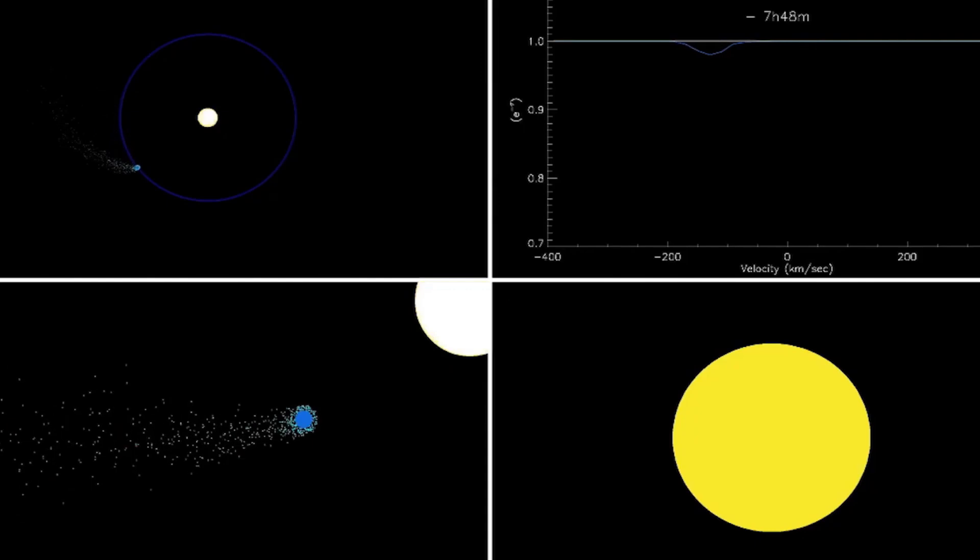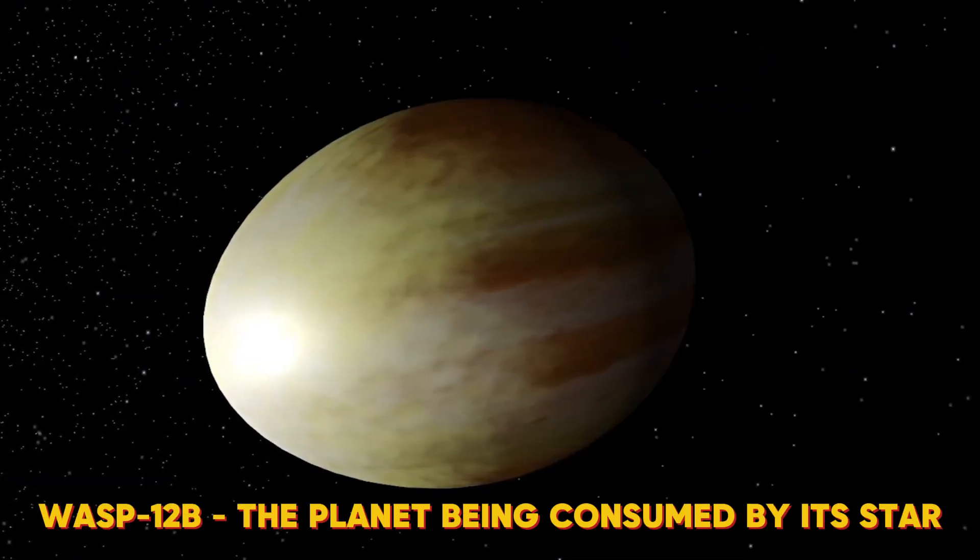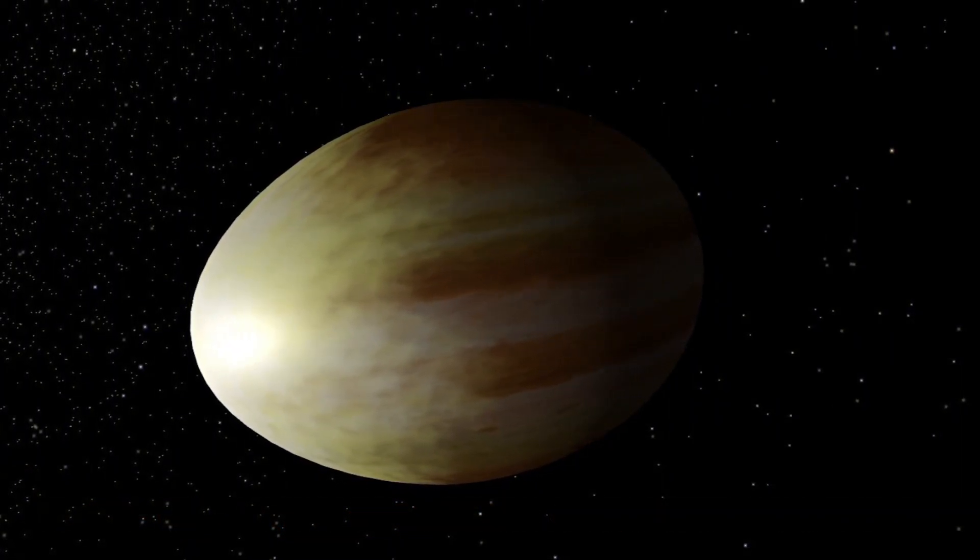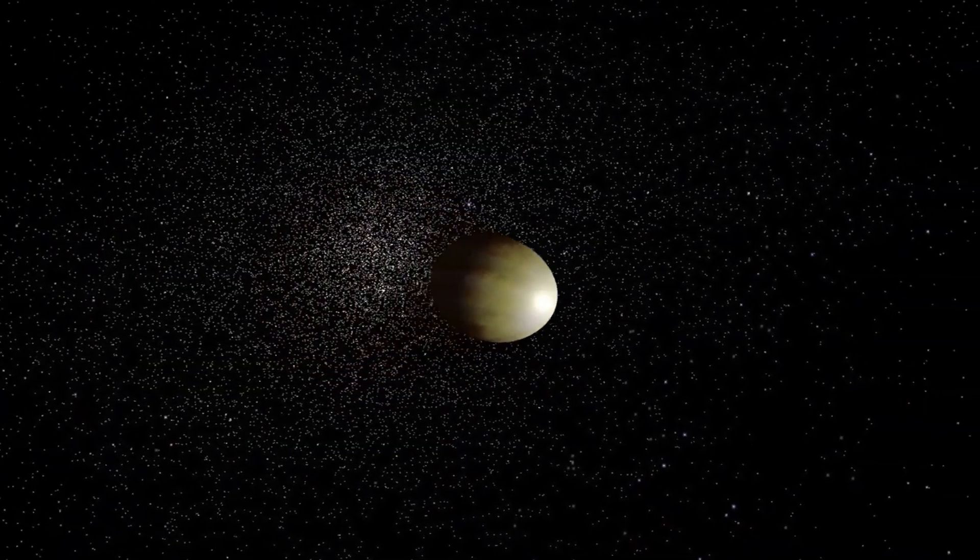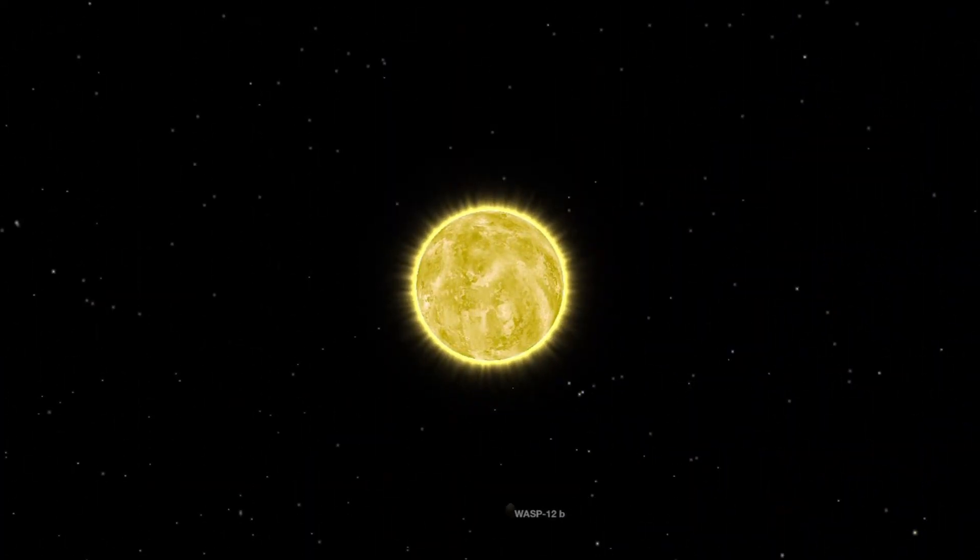From reign of glass, let's move to a planet with an even more dramatic fate. Meet WASP-12b, the planet being eaten by its star. WASP-12b is another hot Jupiter, but it takes our definition of hot to a whole new level.